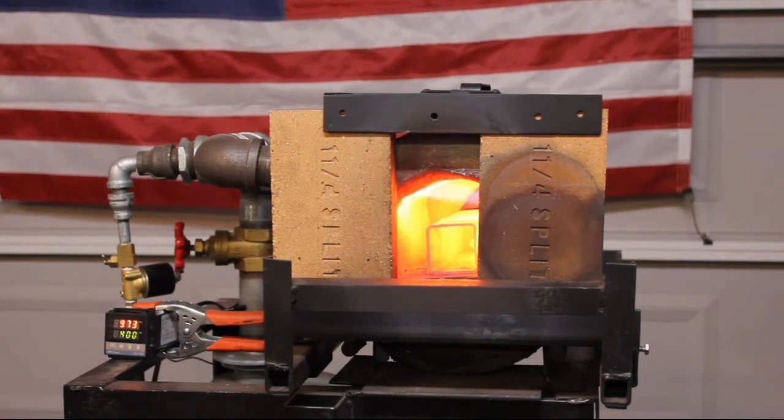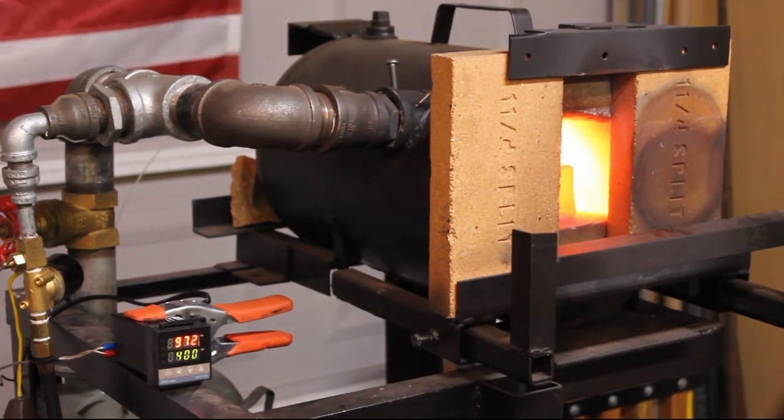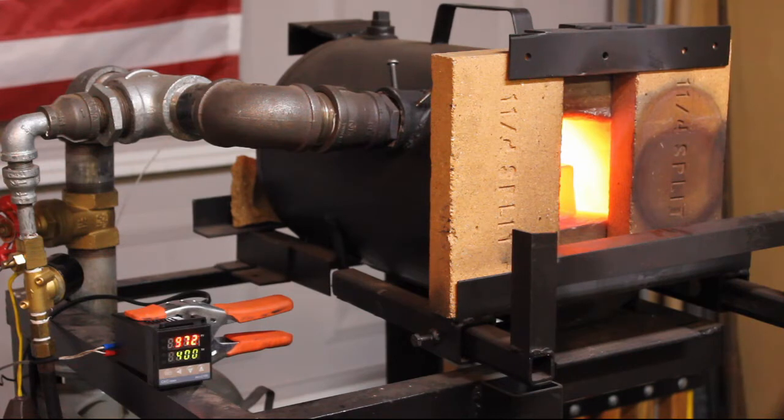And it still got up to around 1800 degrees Fahrenheit, which to be honest is hotter than I thought it was going to get. I like to heat treat in this forge 1084, so 1500 degrees would have been nice, but it gets way hotter than that. I'm going to try to figure out a way in the coming weeks to run this forced air burner at a lower temperature.